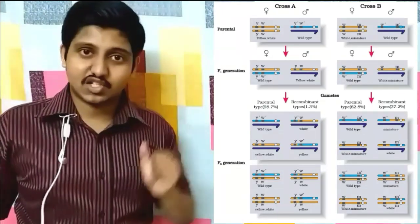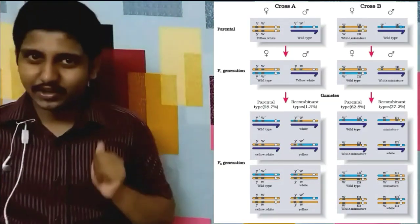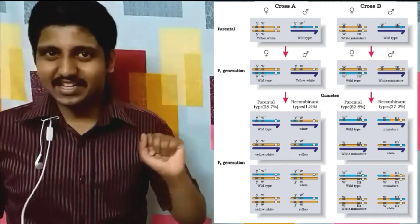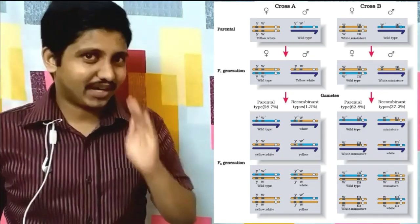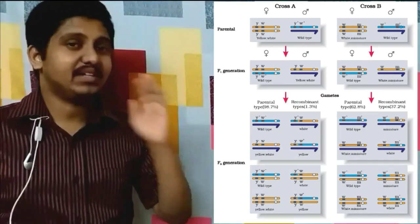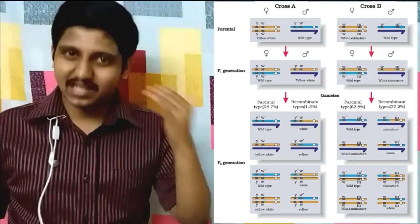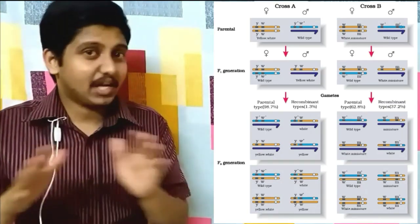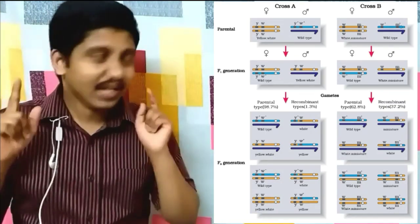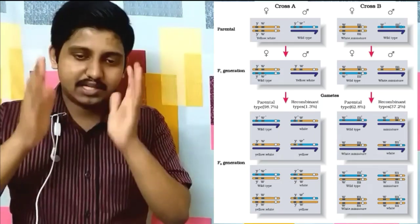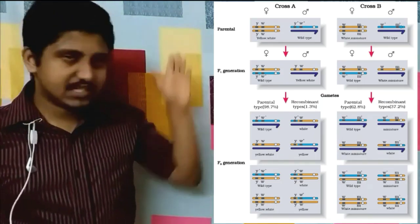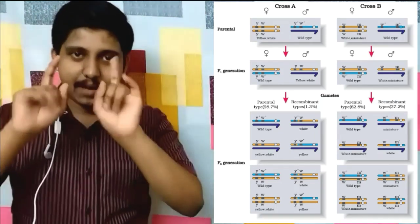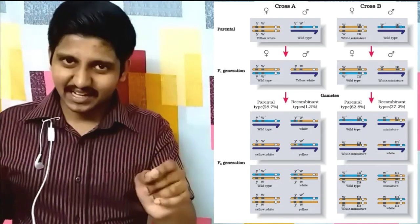This is a chart given in NCERT regarding linkage and recombination. It was an experiment done by Morgan and his students on Drosophila melanogaster. Let's first discuss the first part, but before that you need to know what linkage is.